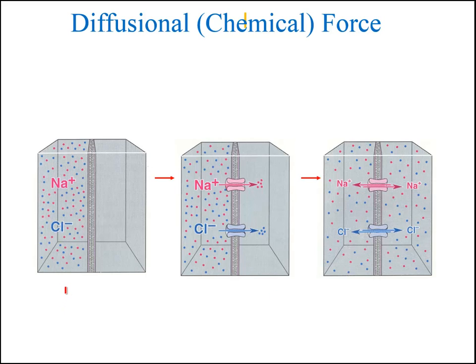As we can see here, if sodium and chloride are more concentrated on one side of the membrane and they're given a way across the membrane, they'll flow until they reach equilibrium.